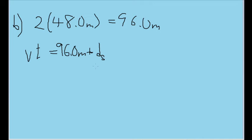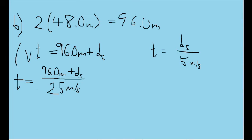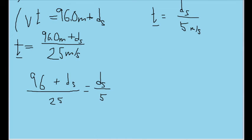Let's find what ds actually is. The time it takes for the slow-moving cars to move distance ds can be represented as ds divided by 5 meters per second (V_s). Similarly, for the fast car, we solve for t using 96 plus ds divided by 25 meters per second. Since these times are equal, we can set the two formulas equal to one another. Dropping units temporarily for simplicity, we multiply through by the denominators and distribute.